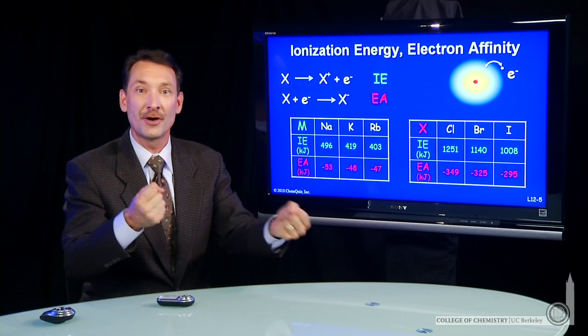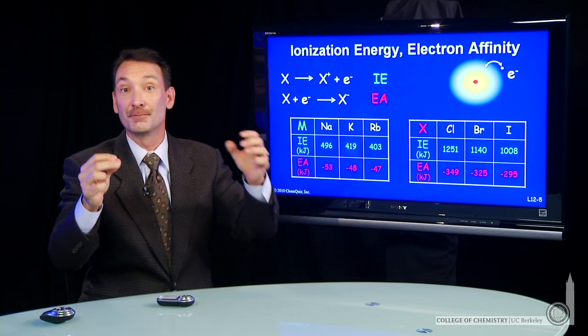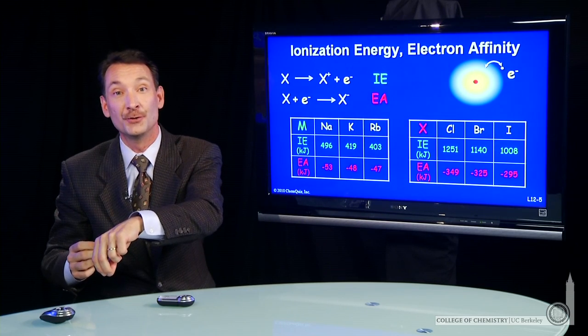So why does sodium chloride form? Pulling off the electron costs more than adding it to the chlorine.